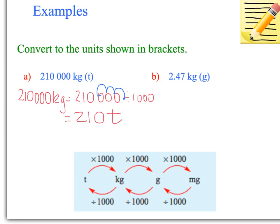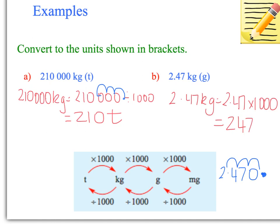Next one, 2.47 kilograms to grams. We're converting kilograms to grams, so we multiply. 2.47 kilograms equals 2.47 times by 1,000. When we multiply, we move the decimal place right. So 2.47, we're going right three decimal places. One, two, three, so we put a zero here. That means my decimal place is now at the end. So it is 2,470 grams.